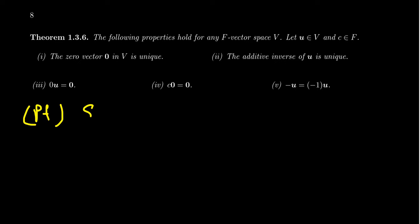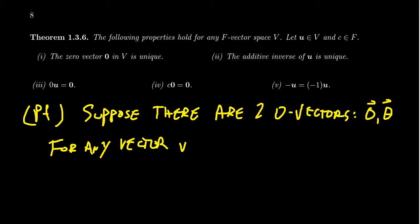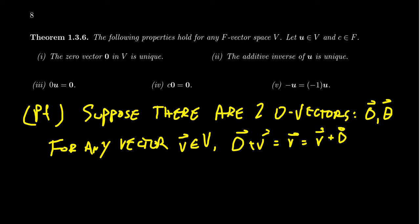The proof uses a technique called proof by contradiction. Suppose there are two zero vectors — we'll call the first one zero and the other one theta, since theta is a Greek letter that looks like zero. Since both are zero vectors, for any vector V inside our vector space, we have that zero plus V equals V, and V plus zero equals V. This is also true for theta: theta plus V equals V, and V plus theta equals V.